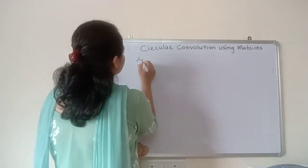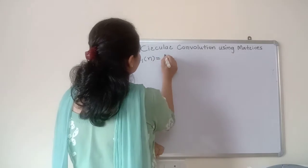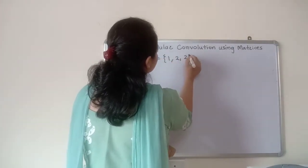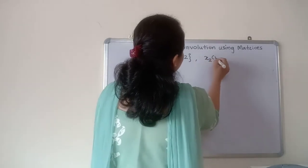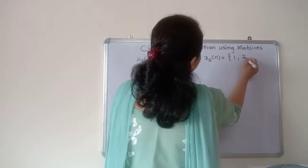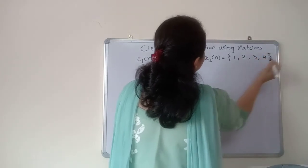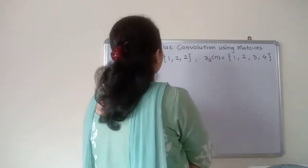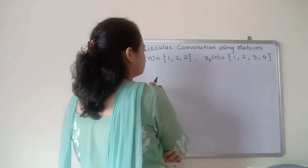Take one example. Two sequences are given: x1 of n is equal to 1, 2, 2. Another sequence x2 of n is equal to 1, 2, 3 and 4. So these two sequences are there and it is asked to find out the circular convolution of these two.